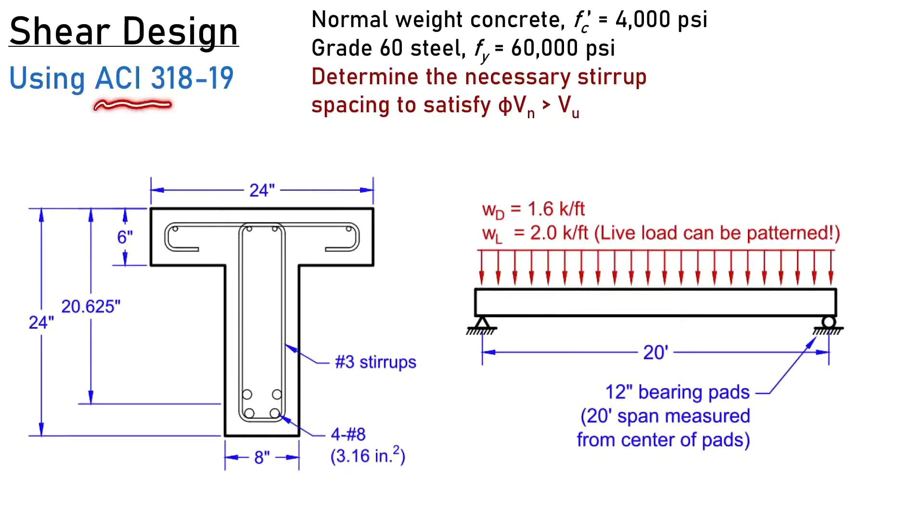To begin, we'll be using the ACI 318-19 code. There have been shear changes from 2014 to 2019, specifically in the concrete capacity in shear, but we'll talk about that when we get there. We're going to use normal strength materials with F'C of 4000 psi and 60 KSI steel. Numbers to keep in mind: we have a web width of 8 inches and a depth to steel D of 20.625 inches.